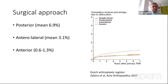Looking at surgical approach: studies show that the posterior approach to hip surgery has the highest risk of dislocation. However, with reinforced repair of the posterior structures, that risk is almost similar to the anterolateral approach. The anterior or AMIS approach has the lowest risk of dislocation.